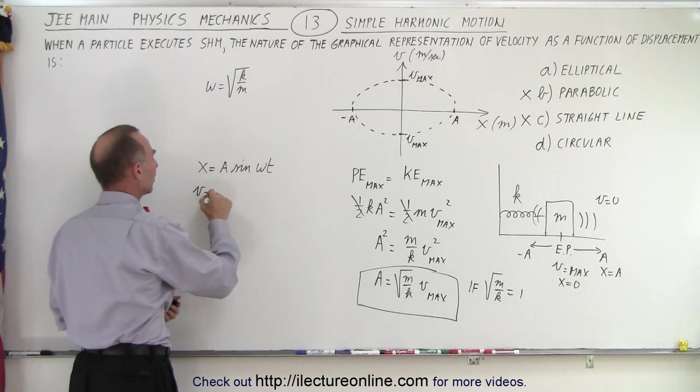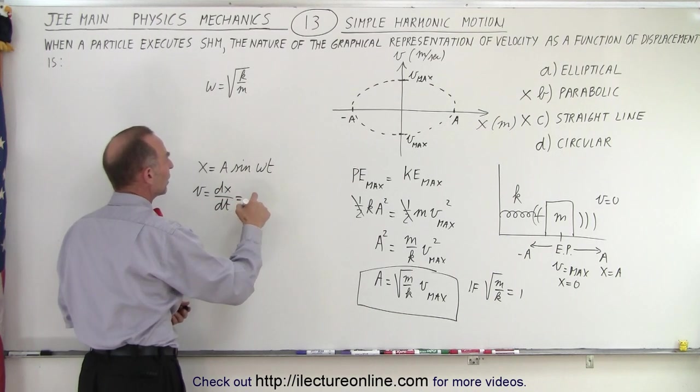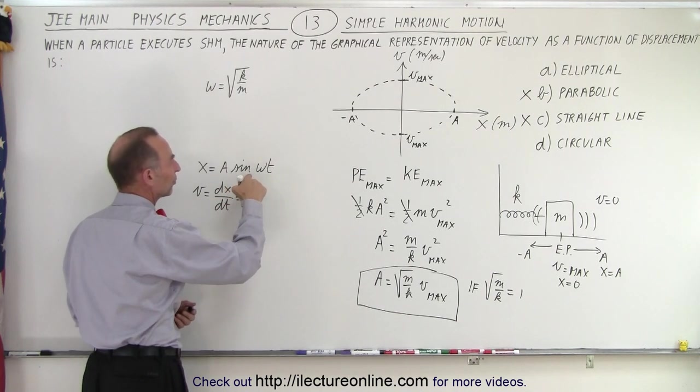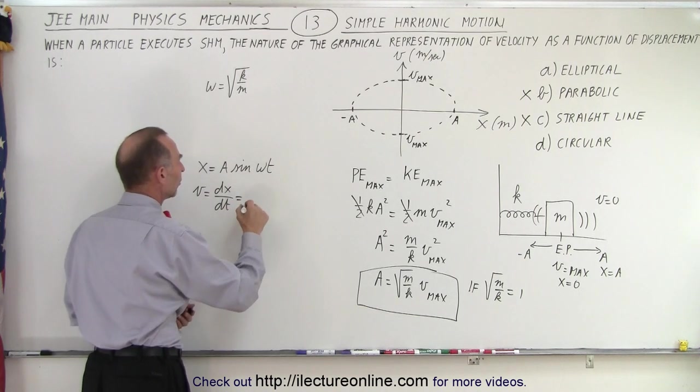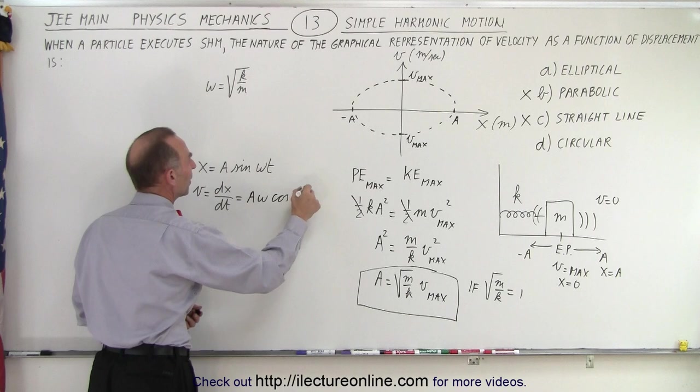The velocity, which is equal to the derivative of position versus time, is going to be equal to the derivative of the sine is the cosine, the derivative of omega t is omega, so it would be a omega times the cosine of omega t.